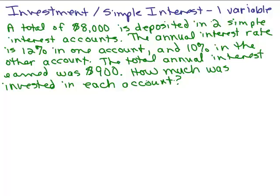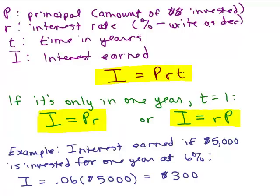Okay, first of all, before even attempting this, we have to make sure that we know the formula for finding out simple interest on an investment. So P is the principal, how much money you put in your account. R is the interest rate, usually given as a percent and we write it as a decimal. T is the time in years and I is the interest earned. I equals PRT is the simple interest formula.